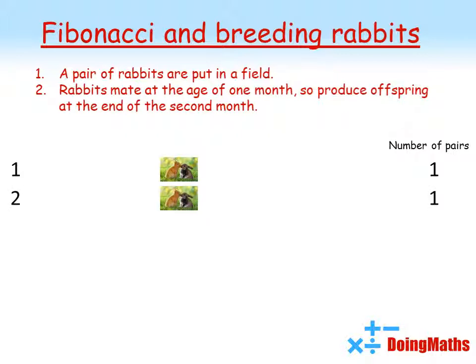At the age of one month the rabbits mate and produce offspring at the end of the second month. As the second month begins we've still got our original pair of rabbits, but going into the third month they've produced one pair of offspring, so we've now got two pairs.